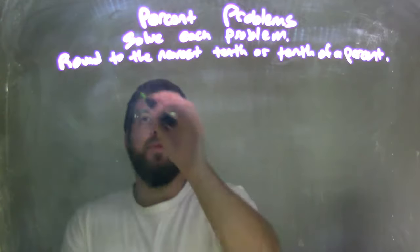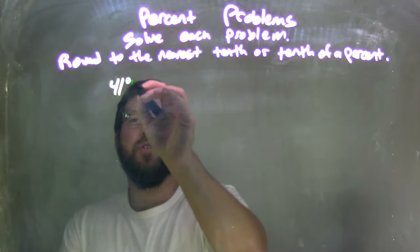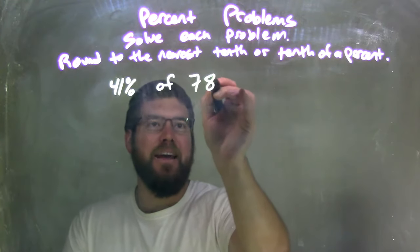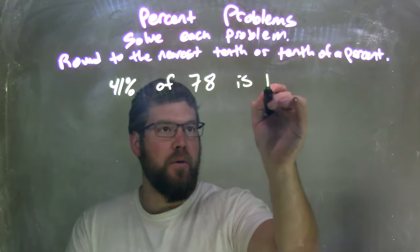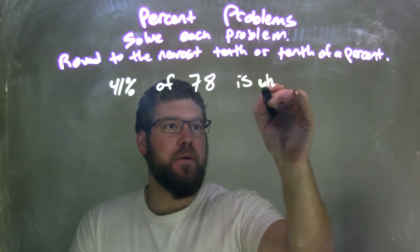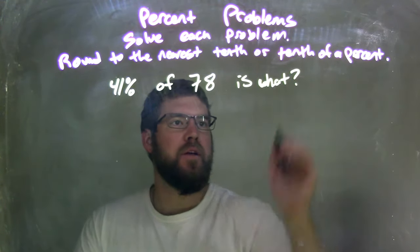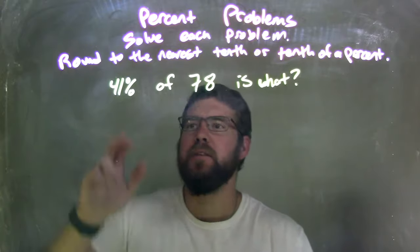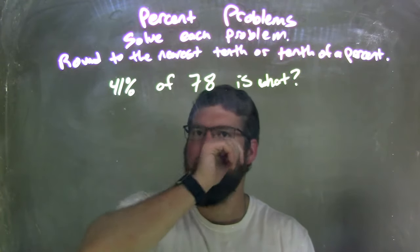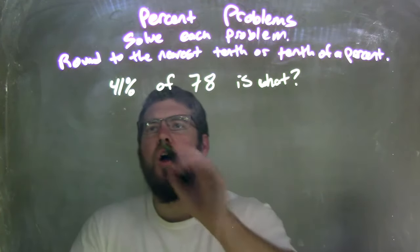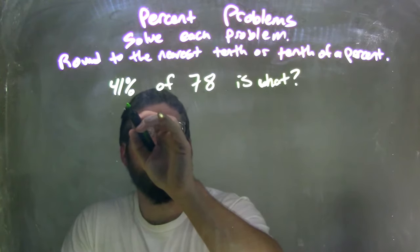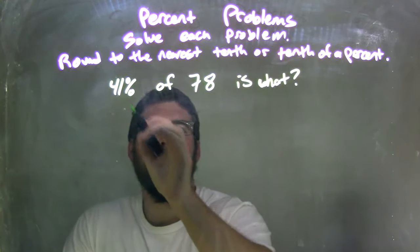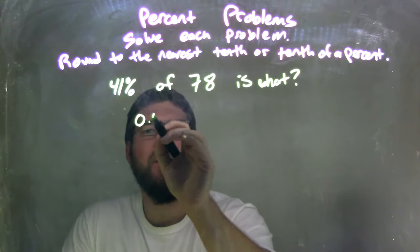So if I was given this problem, I said 41% of 78 is what? Let's put W there. Well, first thing I want to do is convert. 41%, if I want to write that as a decimal, right? If I want to write 41% as a decimal, that's 0.41.